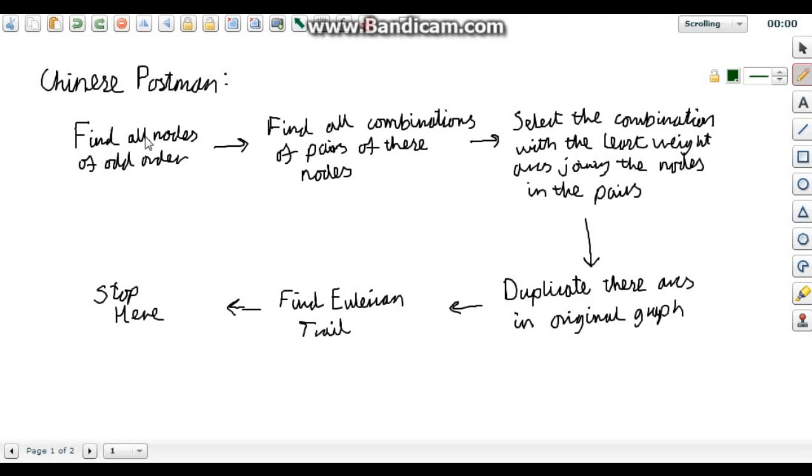So to do this, you need to find all nodes of odd order. That just means all the nodes that have an odd number of arcs going into them. So for example, one, two, three. This would have an order of three.